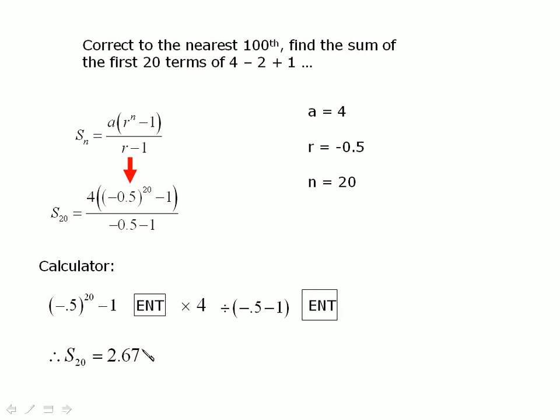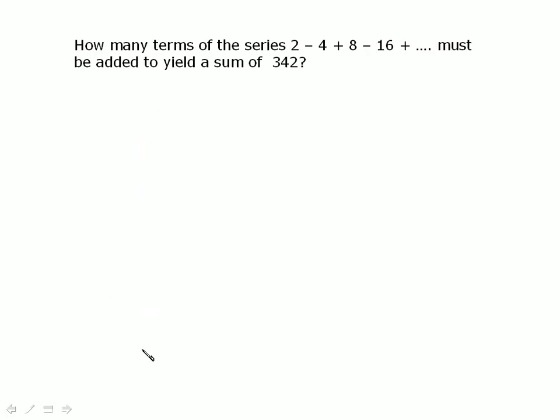So, you do that every time, you'll have no problem. But be aware that you've actually got 1, 2, 3, 4 variables. So, you can actually go after any of the variables in there. So, for this one, it's how many terms of this series, 2 minus 4 plus 8 minus 16 plus whatever, must be added to yield a sum of 342. So, in fact, we are not looking for the sum anymore. We have it. The sum is known to us as 342. So, A is equal to 2. Your common ratio is negative 2. We do not know what the n value is. But we do know that the sum of those n terms is 342.